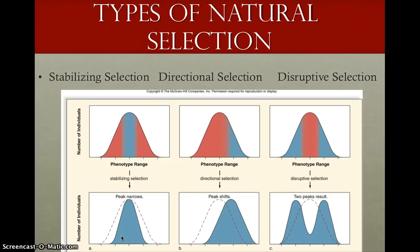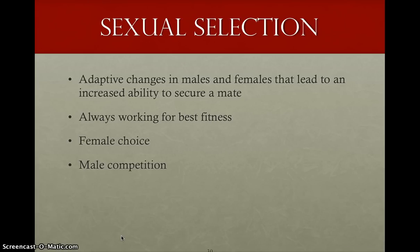So those are the three kinds of natural selection: stabilizing selection, directional selection, and disruptive selection. We also have something called sexual selection, which refers to adaptive changes in males and females that lead to an increased ability to secure a mate. We're always working towards fitness — surviving and reproducing the best. So sexual selection is natural selection between males and females that relates to their different traits.